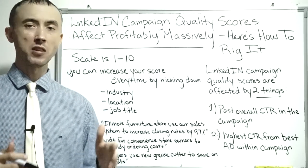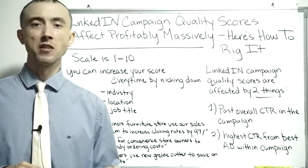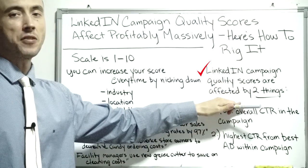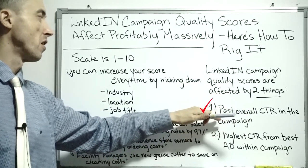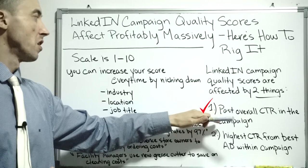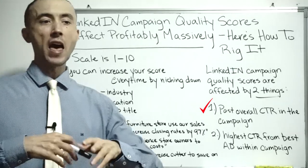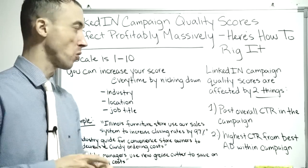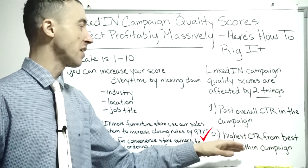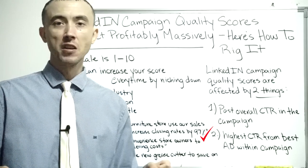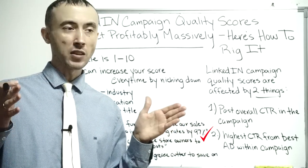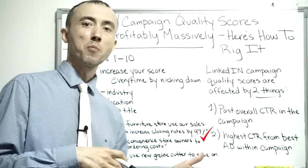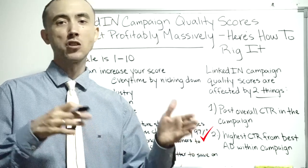There's a certain way to do this that we've mastered, and if you want to make a lot of money on LinkedIn, this is how you do it. LinkedIn campaign quality scores are affected by two primary things — this comes not just from me but also from LinkedIn if you dig into their formula. First, past overall click-through rate in the campaign. Second, the highest click-through rate from your best ad within the campaign, because there's usually one ad that works better than the others. They divide the click-through rate of your best ad by your overall click-through rate to get your true campaign quality score.